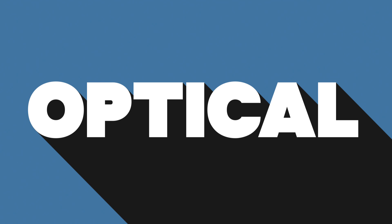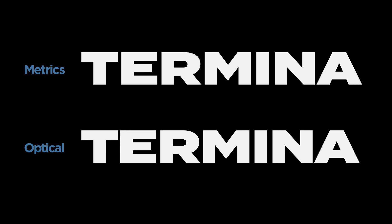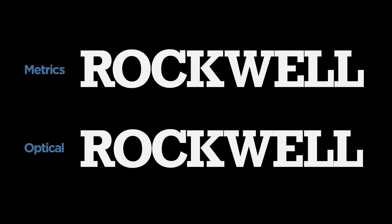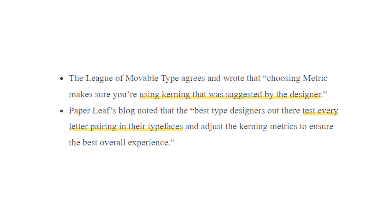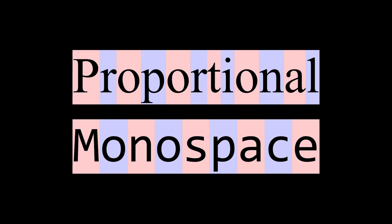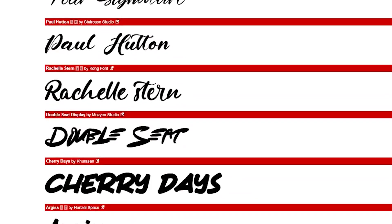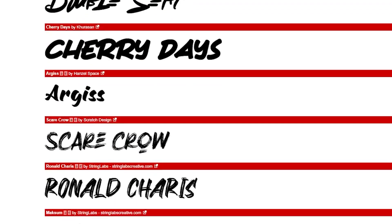Optical kerning uses algorithms to determine the best kerning based on the letter shapes. This may end up looking very similar to Metrics depending on the font, but sometimes it gets it wrong. If you're using a professional font, you almost definitely want to use Metrics rather than Optical, and always use Metrics for connected and monospace typefaces. Beware cheap fonts — you may find Optical gets you better results when you use free or cheap fonts.